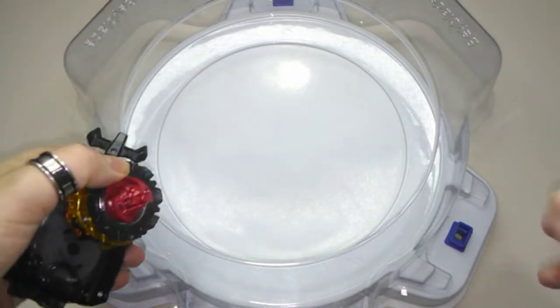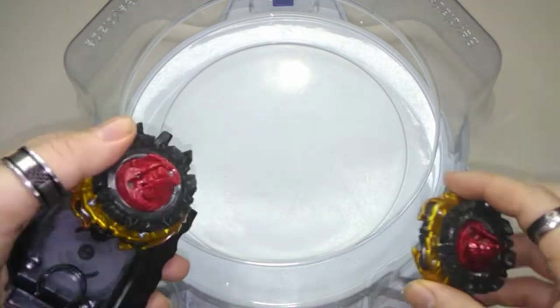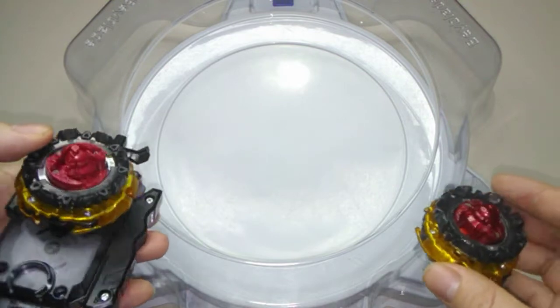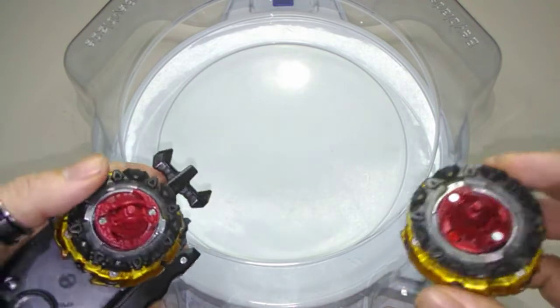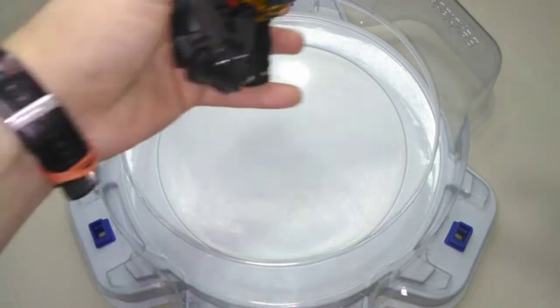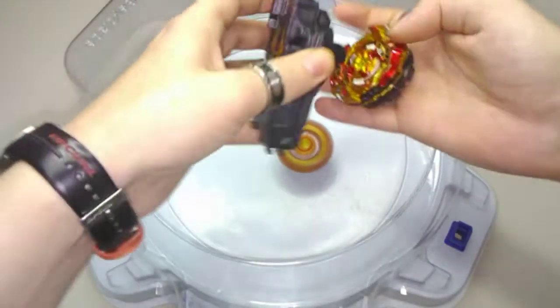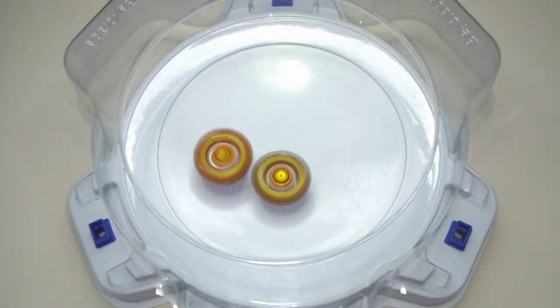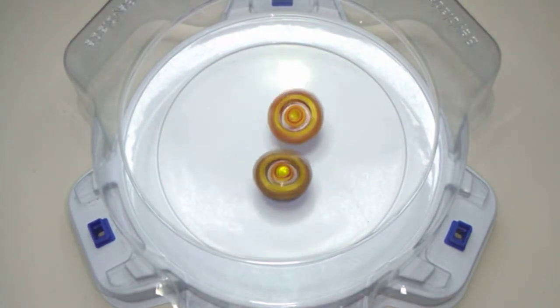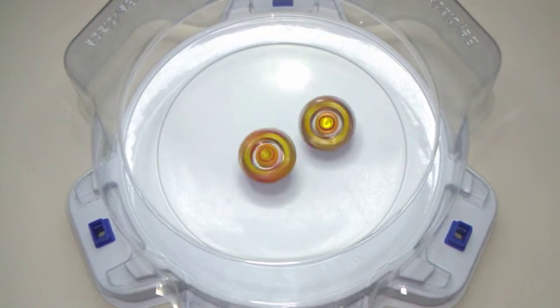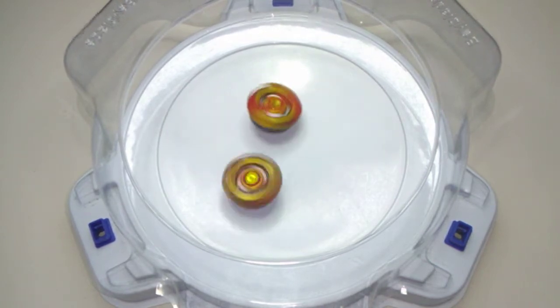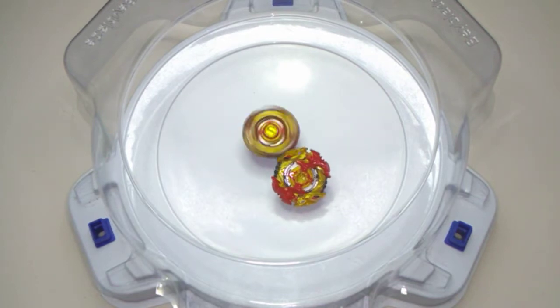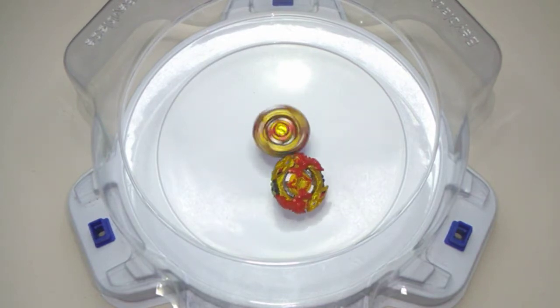Here we are with rounds number one. I'm going to launch Turbo Sprizen first, both bays in right rotation and beginning with stamina mode and 3, 2, 1, let it rip or go shoot. And some nice little impacts to begin with, and I'll try and get those Turbo Wings or Burst Stops to activate if I can, and slowing down is Turbo Sprizen and taking the first victory, we've got Cho-Z Spriggan.